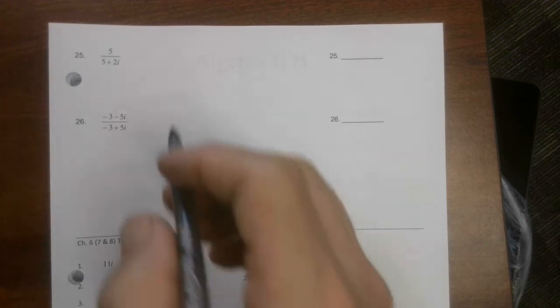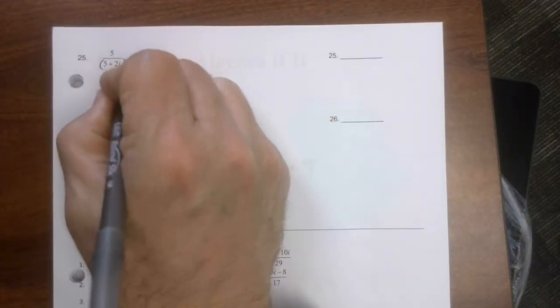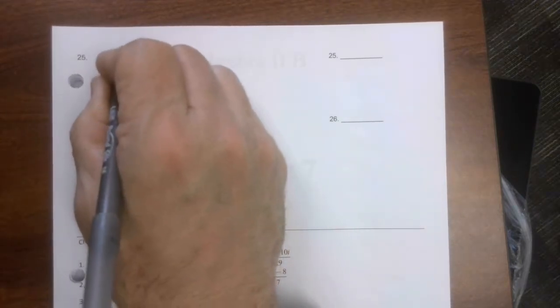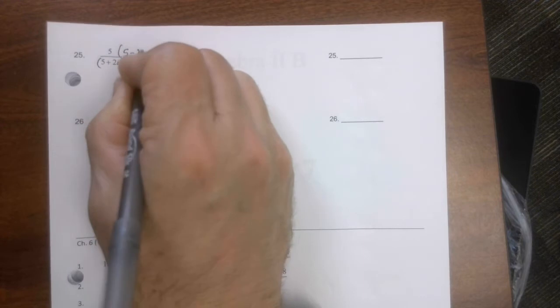All right, so here's the last part. I still got to multiply this by the conjugate. If I do that to the bottom, I got to do that to the top.